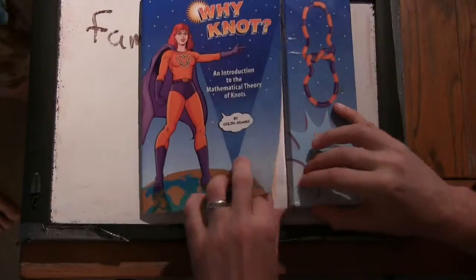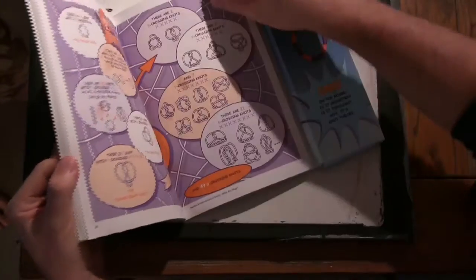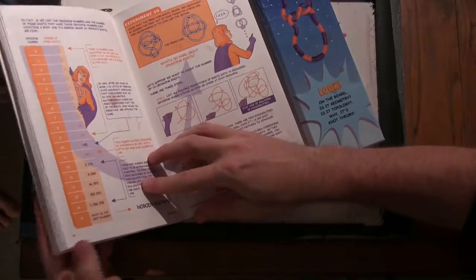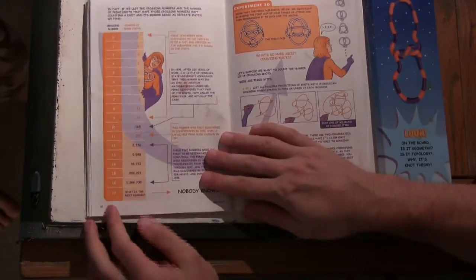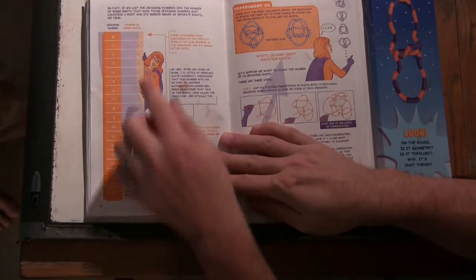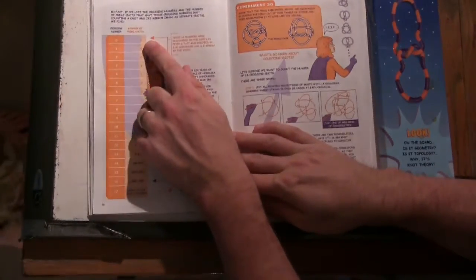Inside Colin Adams' book, Why Not?, he has a page, which is page... What is that? 38? That lists all the different kinds of knots. With no crossings, there's one knot.